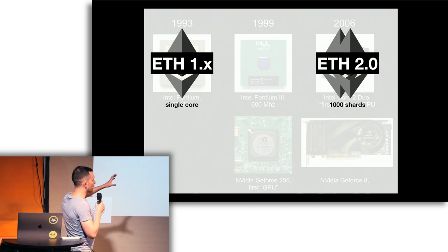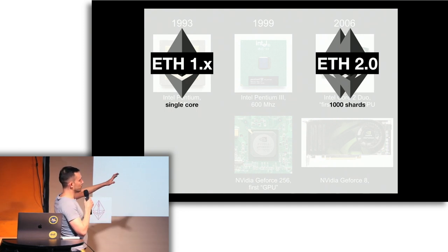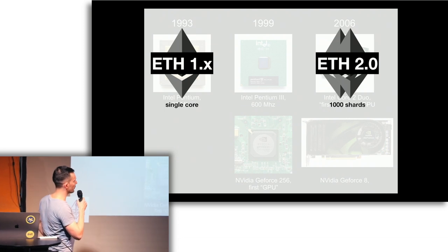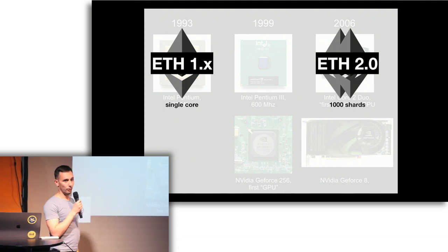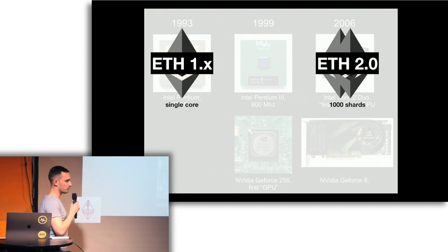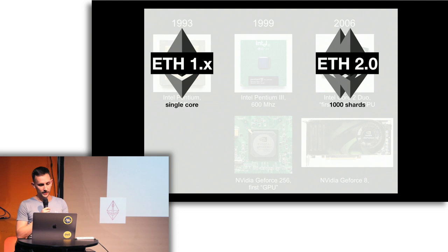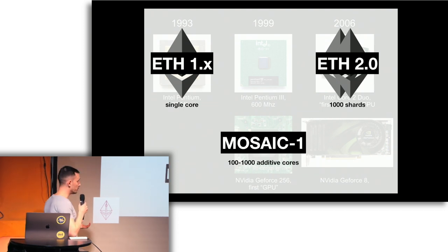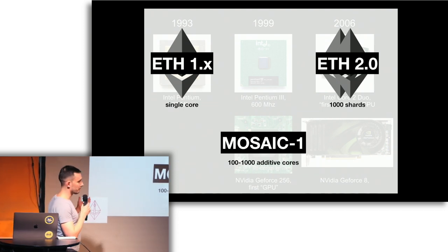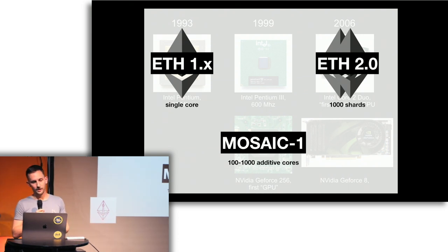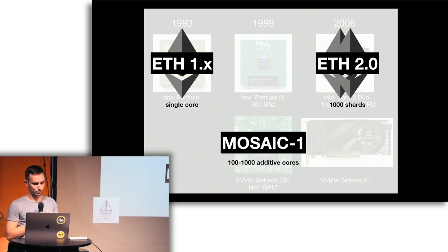We're not in 2006 or the 1990s, so our version of a dual or multi-core processor will be one that runs with 1,000 shards. We won't go to two cores — we'll go to 1,000 shards. But it's a hard problem. And the question is: can we not build a GPU in the meantime that gives us 100 or 1,000 additional cores that we add on to Ethereum 1x so that we already get a performance boost?